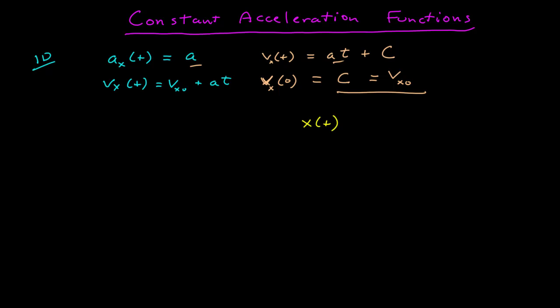The position as a function of time is now going to be the antiderivative of the velocity function. That's equal to the initial velocity times time, plus the antiderivative of the acceleration term, which is one-half a t squared plus some additive constant. We can find that constant by the initial conditions — the value of the position function at t equal to zero. That gives us just the additive constant c, which we name the initial position, often called x naught.